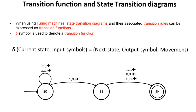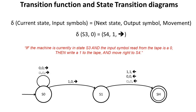So let's take this Turing machine represented by this state transition diagram below and come up with the transition functions. Here's a function: δ(s3, 0) = (s4, 1, right).